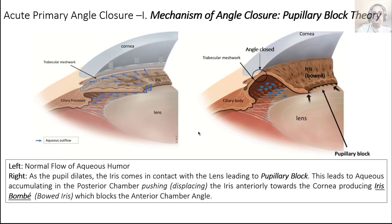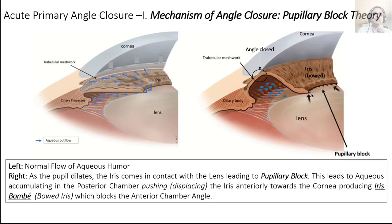This is how it appears on OCT — the iris bombé has blocked the anterior chamber angle right here, producing grade 1 or grade 0 angles where pressure will start rising because the trabecular meshwork is blocked. The pupillary block: the pupil dilates due to any precipitating factor, the thick lens comes into contact with the iris in a mid-dilated position, blocking the passage for aqueous. This blockage is complete around the entire pupil.